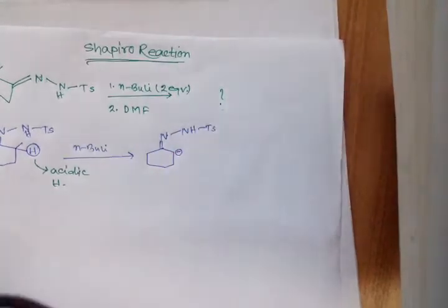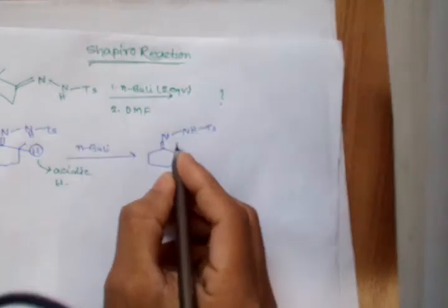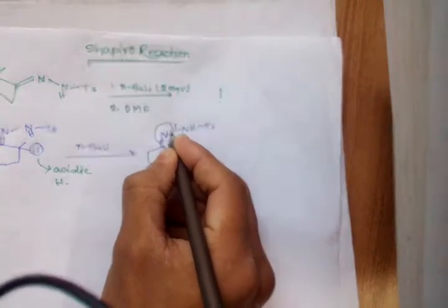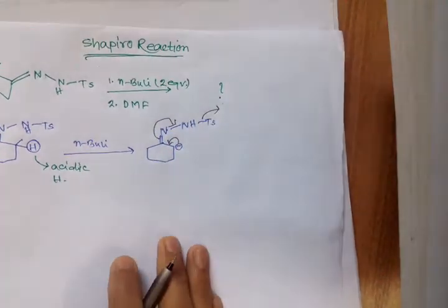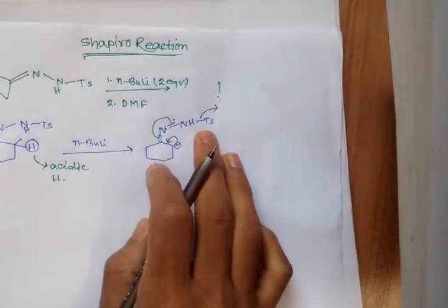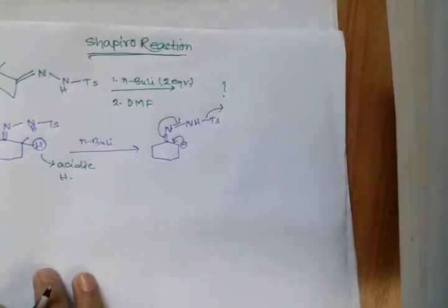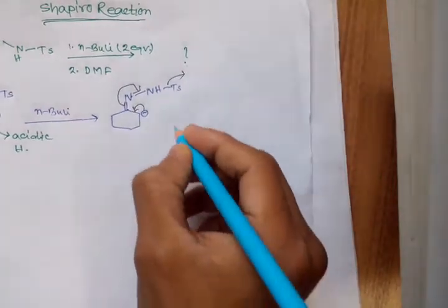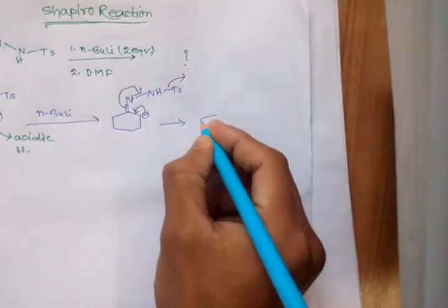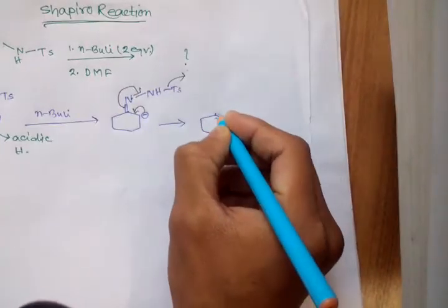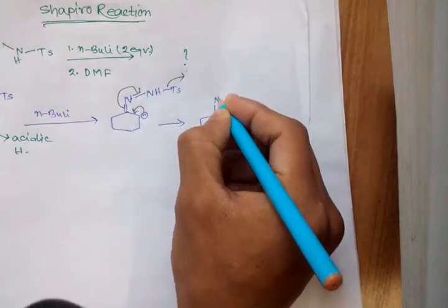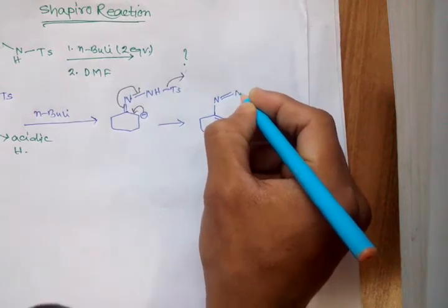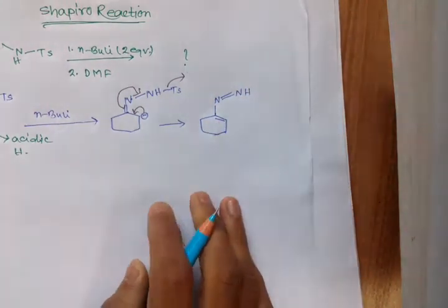When this negative charge undergoes resonance, it comes here and the tosyl group is eliminated from this system. So we get a double bond — like this one.